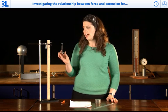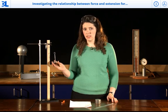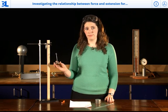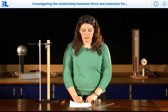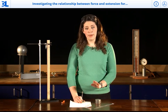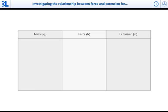Every time I attach another mass onto the spring, I'll be increasing the force in it by 1 newton. For this investigation, you'll need to have a table, and that table should have three columns: mass in kilograms, force in newtons, and extension in meters.